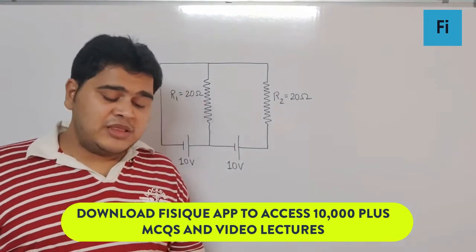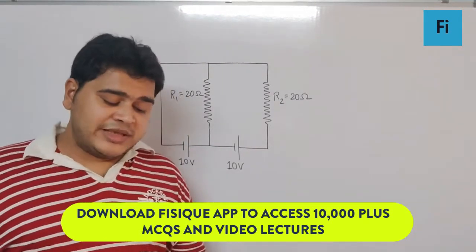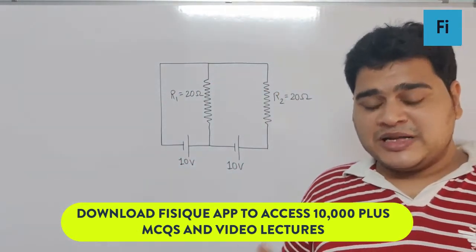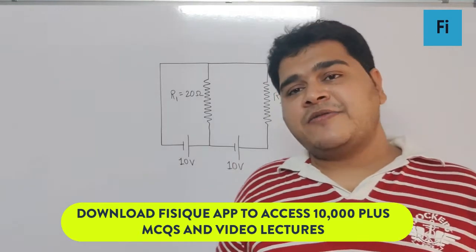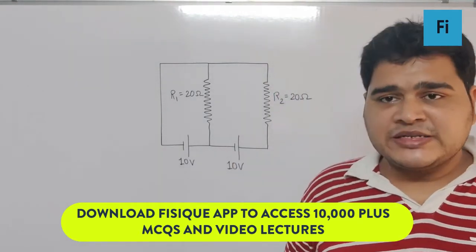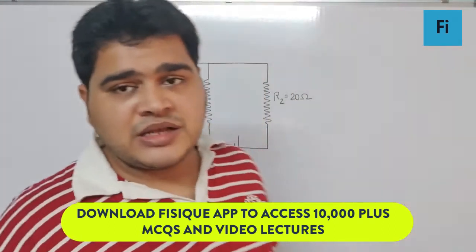Guys, the question says in the given circuit the cells have zero internal resistance. The currents passing through resistance R1 and R2 respectively are - as you can see, the two batteries are connected in such a way that the current passing through R1 will be in the opposite direction from both of them.